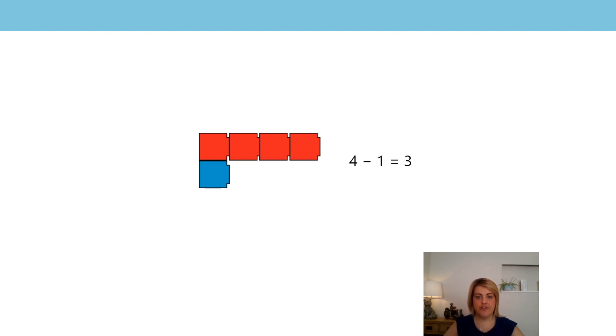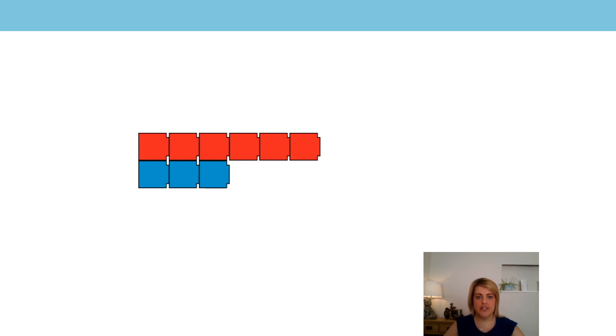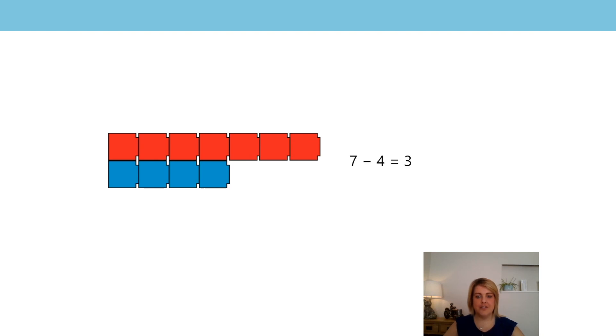Let's have a look at the representations with the equations and link all of this to our new stem sentence. There are four red cubes and one blue cube: four subtract one is three, the difference is three. If I add one to the minuend and one to the subtrahend, five subtract two is three — the difference stays the same. If I add another one to the minuend and one to the subtrahend, six subtract three is three. And finally, adding one more to each: seven subtract four is still three. Well done.